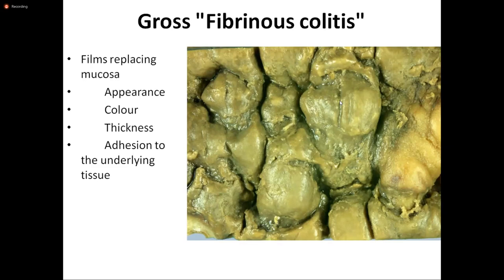Gross fibrinous colitis: the appearance is greasy, color is gray, and it is thick. There is adhesion to the underlying tissue — permanent, steady adhesion.